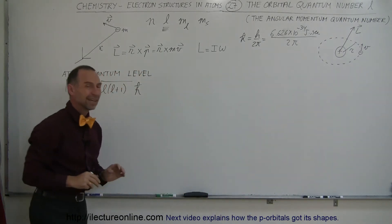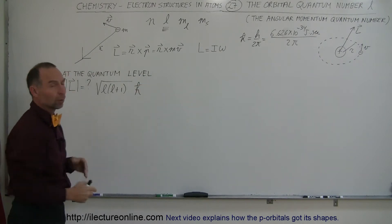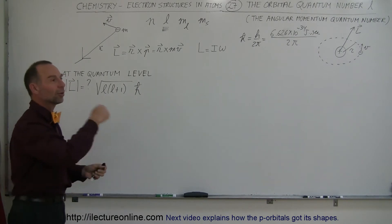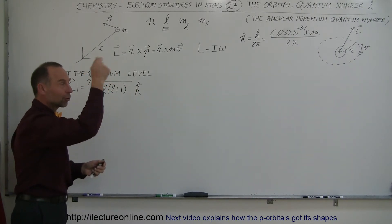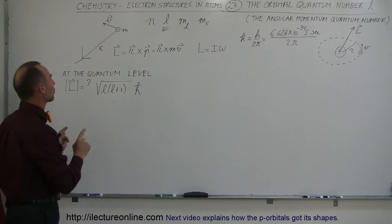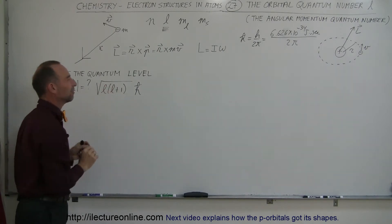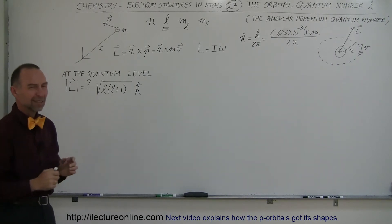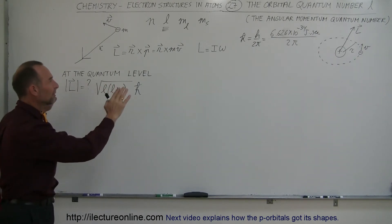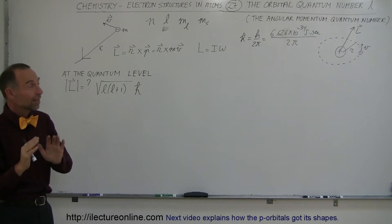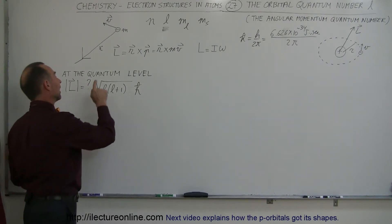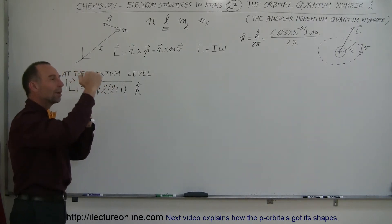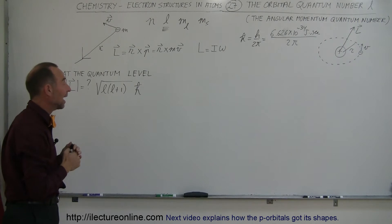This works at the macro scale with large objects like the moon going around the Earth, but it doesn't work at the small quantum level. When we get down to the size of an atom and talk about electrons, neutrons, and protons, this whole theory falls apart. They still have angular momentum, but at that level we realize the angular momentum is quantized — it can only have stepwise increases.